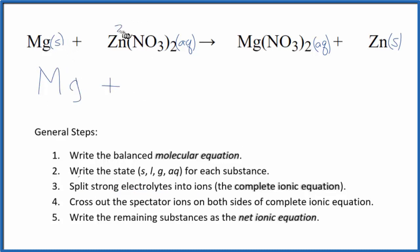Zinc is always 2 plus. If you didn't know that, the nitrate ion is always 1 minus. You should memorize that. Since we have 2, this has to be 2 plus to balance out. Magnesium is in group 2 on the periodic table, 2 plus, and our nitrate is negative.